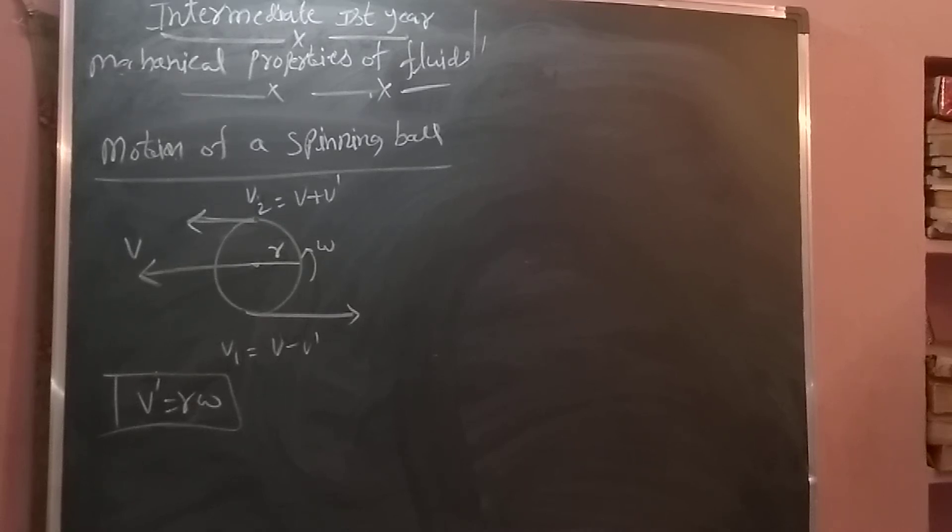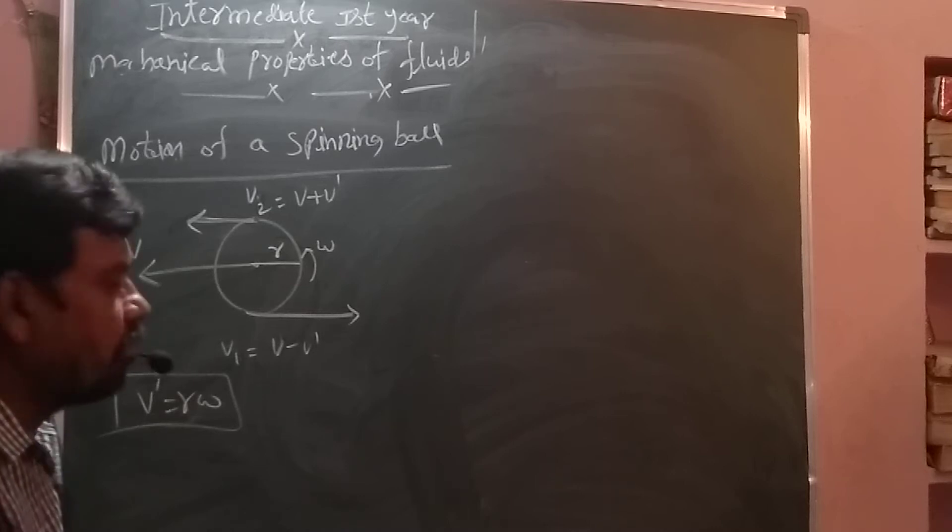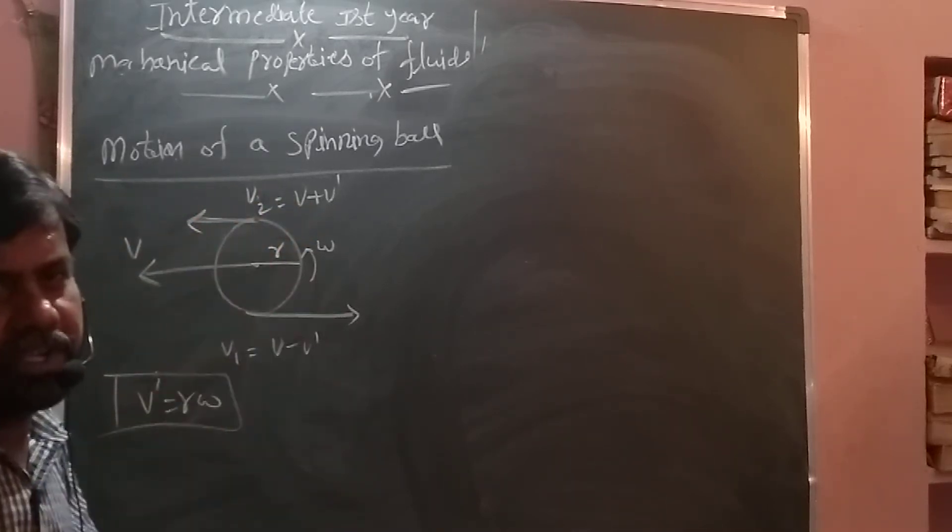Now we are discussing about motion of a spinning ball. For example in cricket, for a spinning ball, if you observe what happens, it is moving linearly and simultaneously it is having rotation.